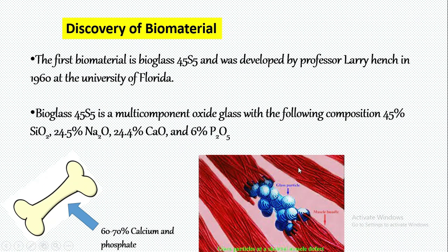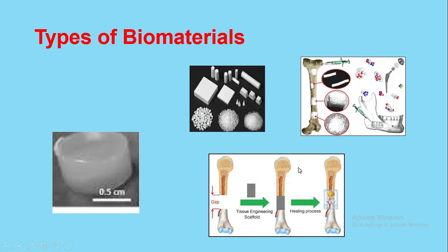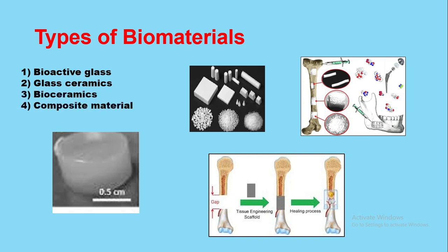There are four types of biomaterials: bioactive glass, glass ceramics, bioceramics, and composite material. We are going to discuss today about bioactive glass, glass ceramics, and bioceramics. Composites we will discuss in later slides.